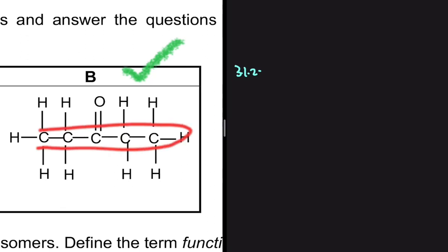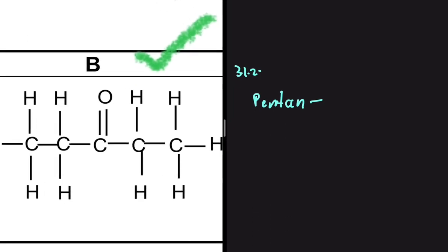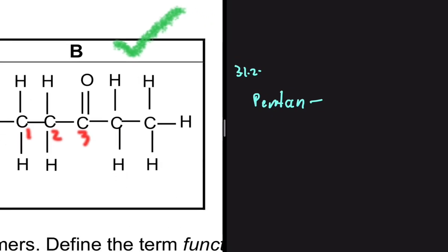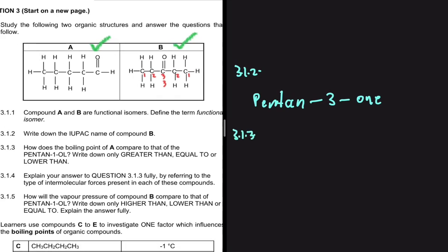Now we need the longest carbon chain. It is easy to see that the longest chain has one, two, three, four, five carbons, so we have 'pent.' Next, we look for the position of the carbon bonded to the oxygen. Numbering from the left gives 1, 2, 3; numbering from the right also gives 1, 2, 3. So the functional group is on carbon 3, giving us pentan-3-one as the answer to 3.1.2.